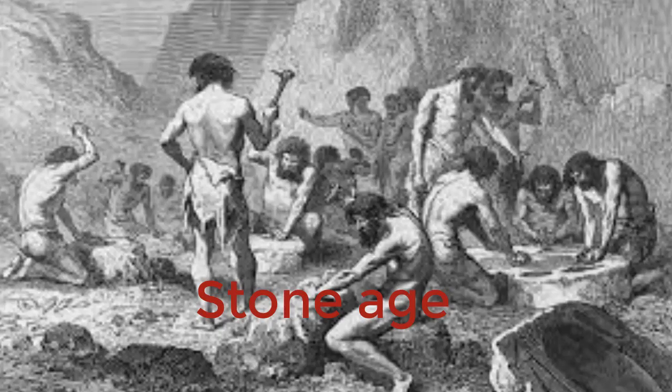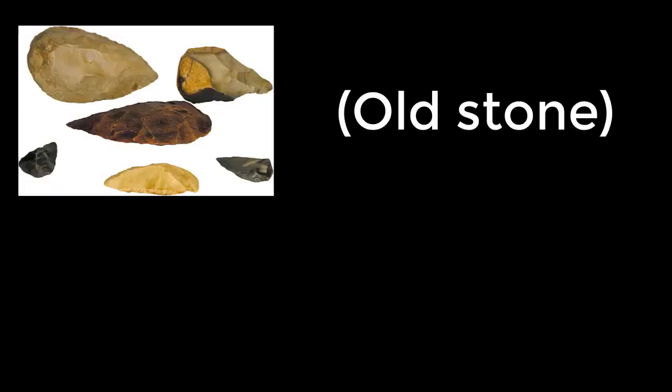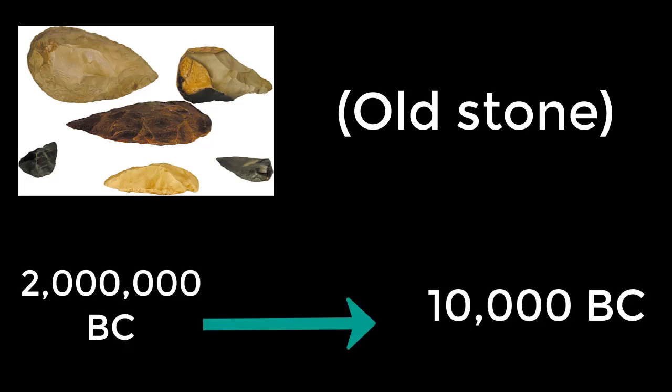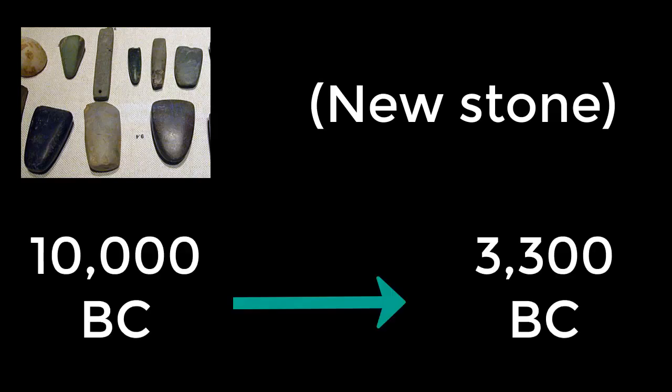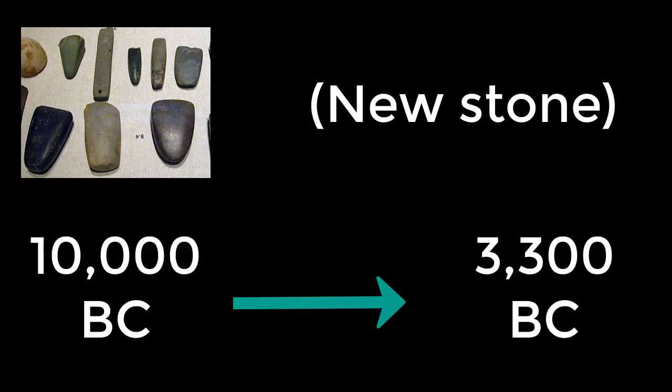The Stone Age: the period when stone was used for tools. It is divided into two parts: Paleolithic, from about 2 million to 10,000 B.C., and Neolithic, from about 10,000 to 3,300 B.C.